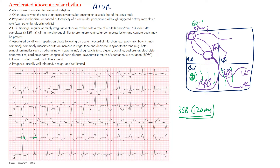Remember: the sinus node has an intrinsic rate of 60 to 100 beats per minute. The AV junctional region tends to be 40 to 60 beats per minute. Anything originating from the ventricles has an intrinsic rate of 20 to 40 beats per minute. These rate ranges help us differentiate and name the rhythms, just as we did with junctional rhythms.